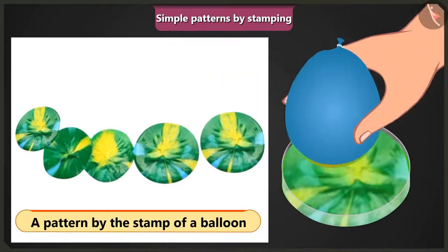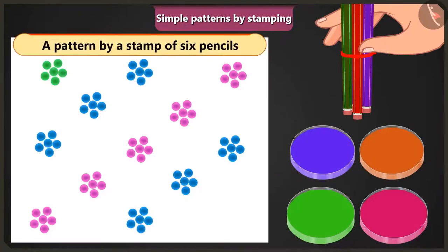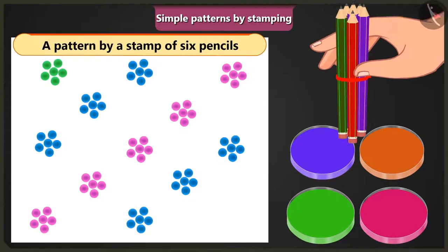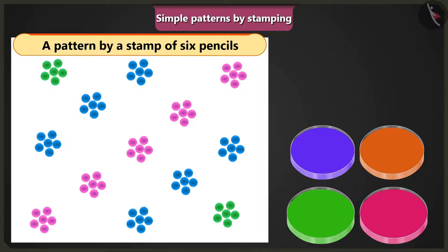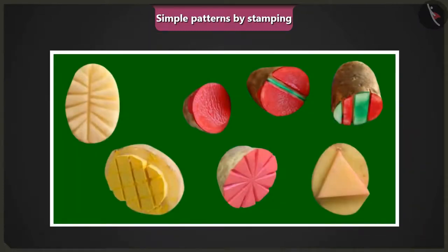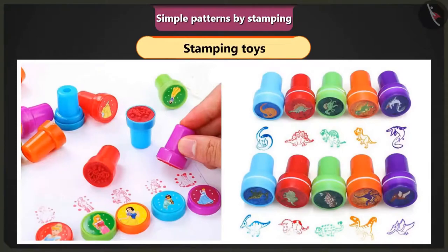This is a pattern made by stamping a balloon dipped in different colours. Six pencils were tied together and dipped in colour, then the bundle was used as a stamp to get this pattern. Different designs were made on potatoes so that after applying colour, these could be stamped for patterns. And yes, children, toys that can work as stamps are sold in shops too. You can also use them to create your favourite patterns.